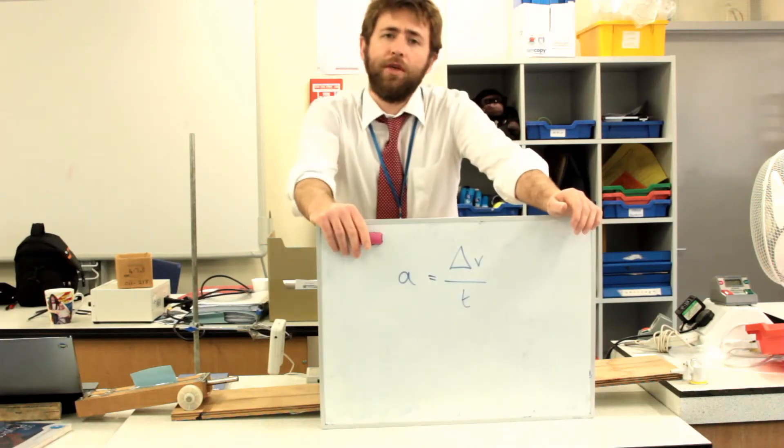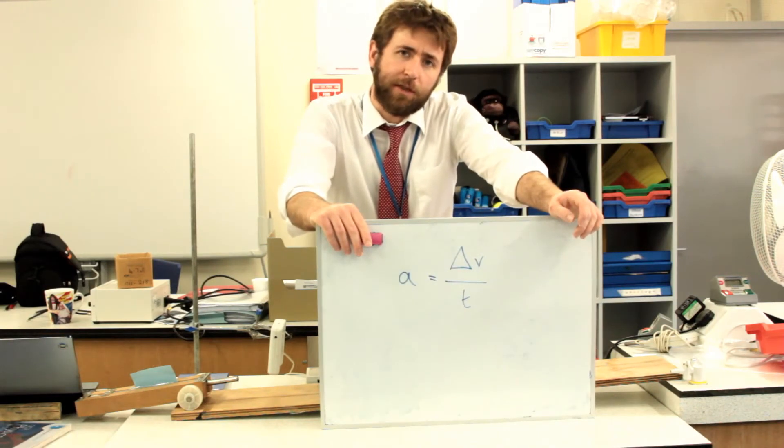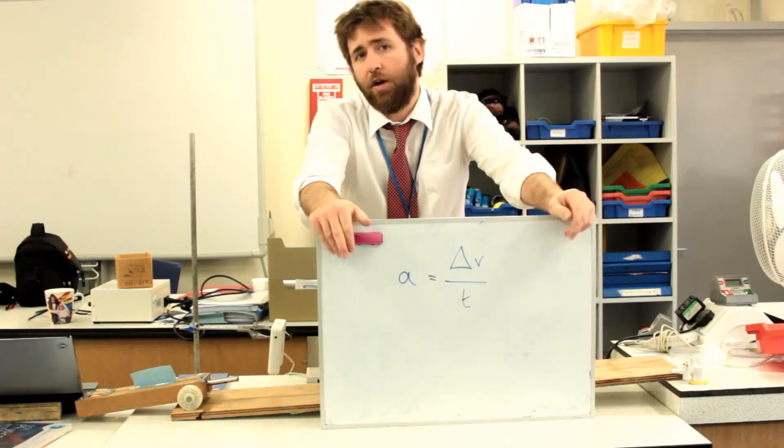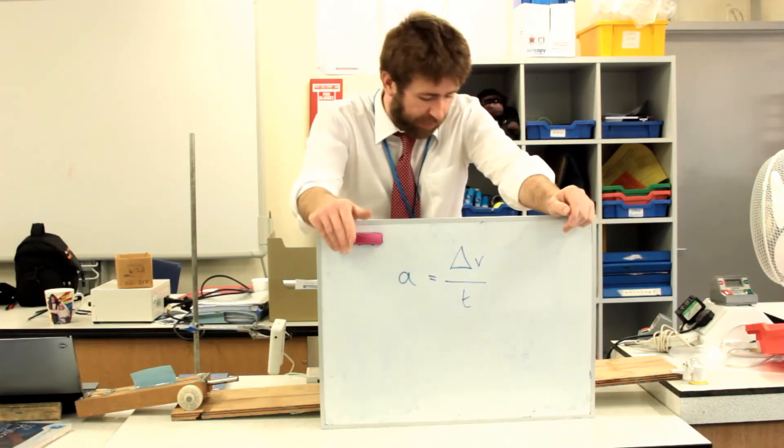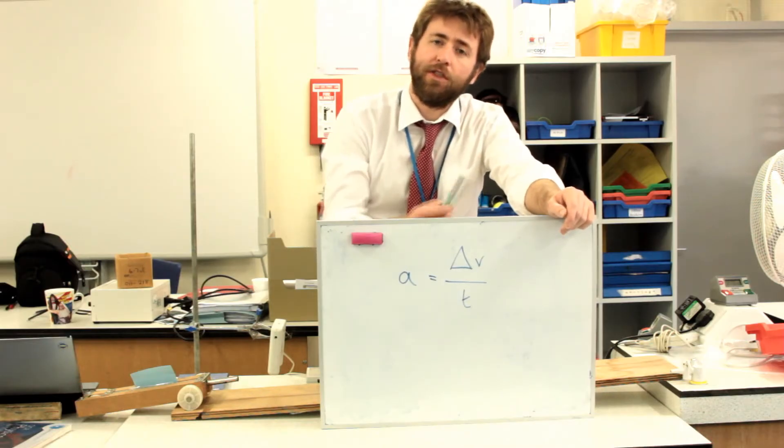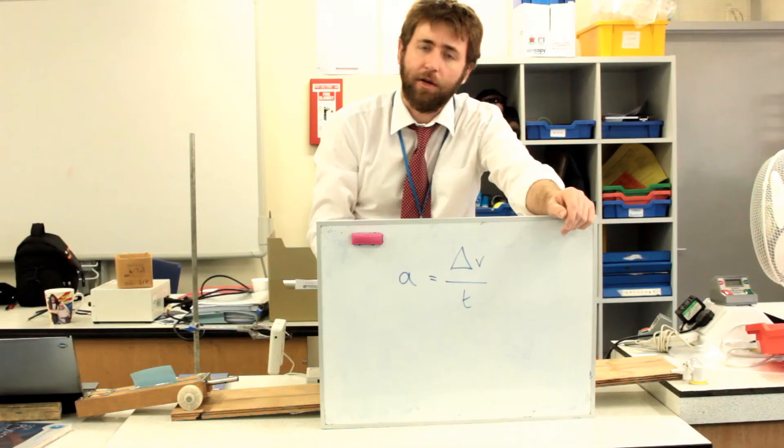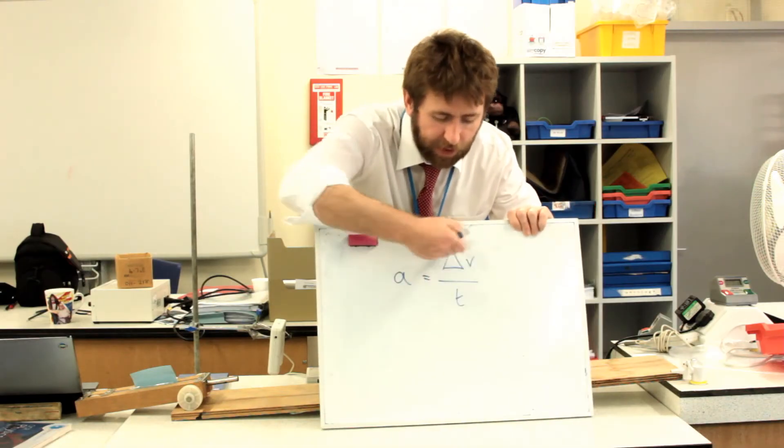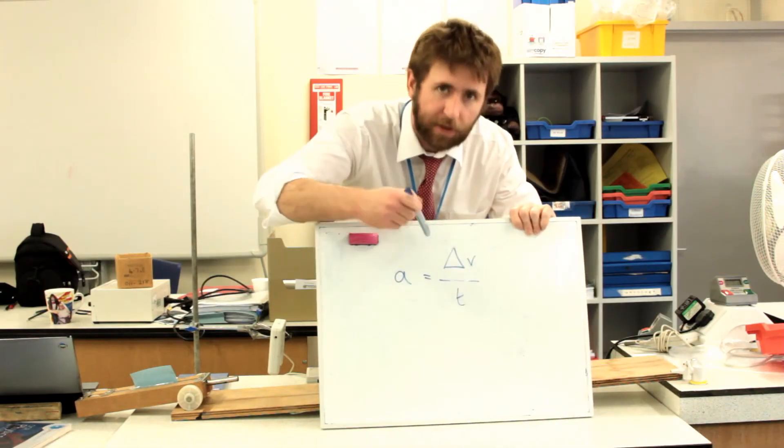So we define acceleration as the rate of change of speed. How quickly do you gain or lose speed? That's acceleration. And you'll be used to talking about fast cars in terms of 0 to 60. 0 miles per hour to 60 miles per hour. That is the change in speed, delta V in the equation.